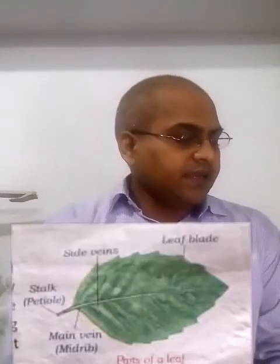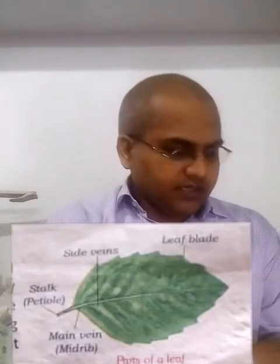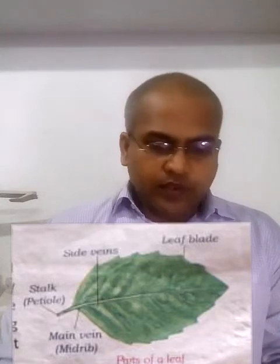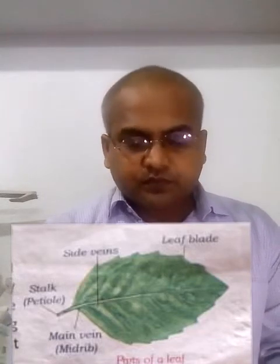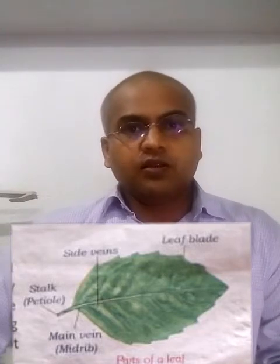Next is two edible stems — onion and potato are the two edible stems we take as food. Next, two edible leaves means cabbage and spinach — these are the leafy vegetables we eat. Then comes two edible seeds, that is gram and pea — these are the two edible seeds we eat on a normal basis.